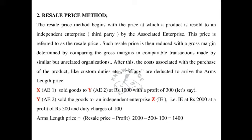After computing the amount, the costs associated with the purchase of a product, like custom duties if any, are deducted to arrive at the arm length price. In this example, X is associated enterprise number 1 and Y is associated enterprise number 2. X sold goods to Y at Rs. 1,000 with a profit of Rs. 300.